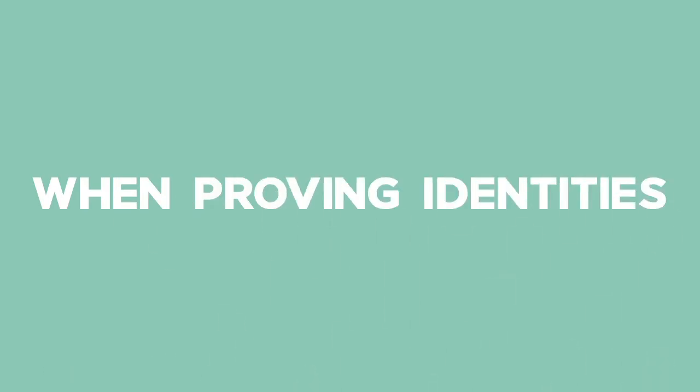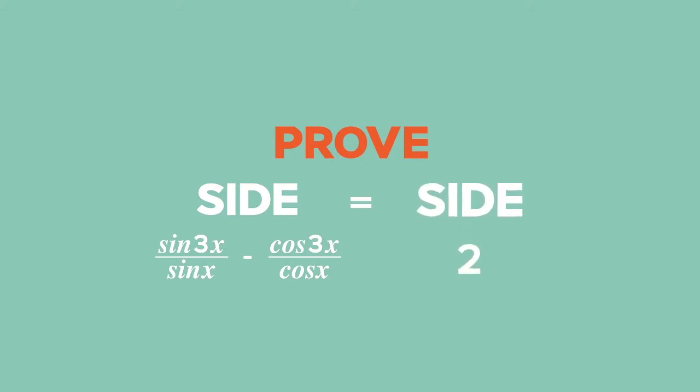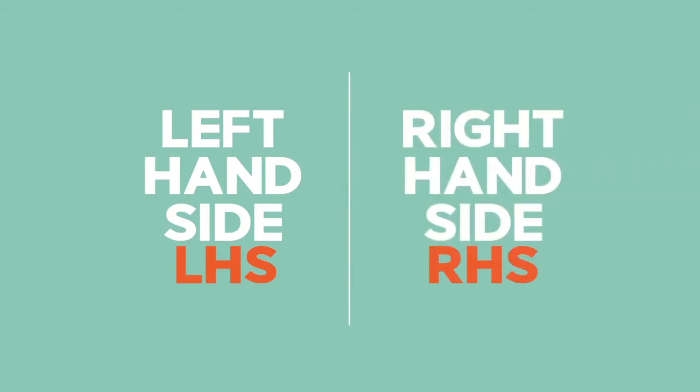When proving identities, we are required to prove one side of an equation equal to the other side. In the process, we work with the left-hand side, or LHS, independent of the right-hand side, or RHS.